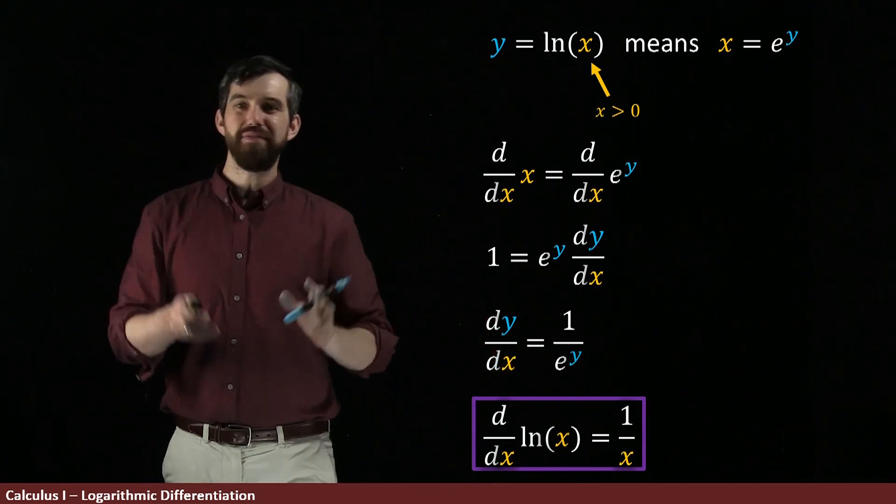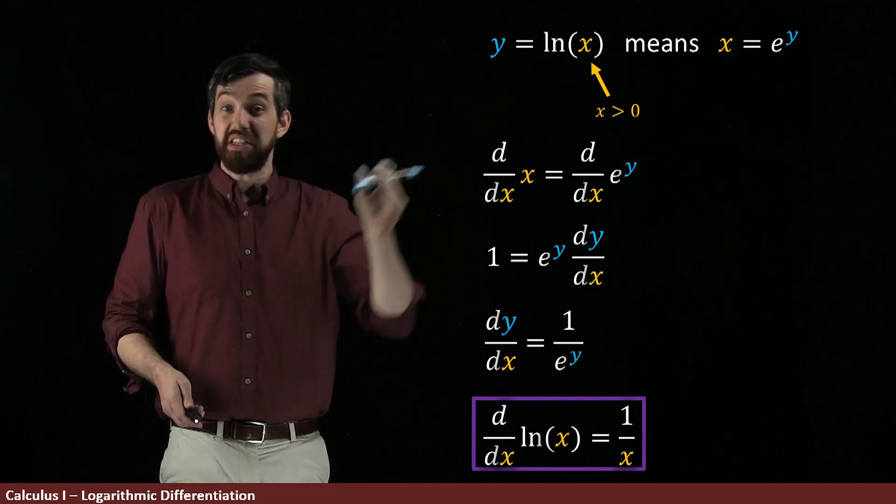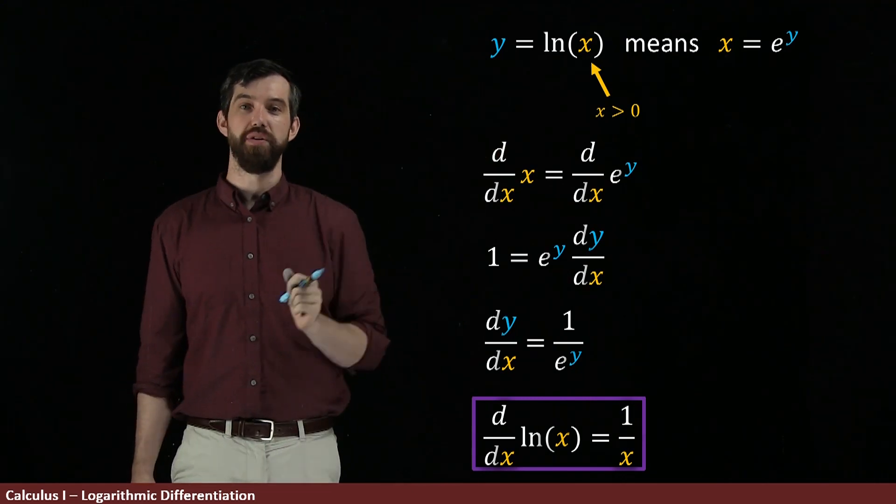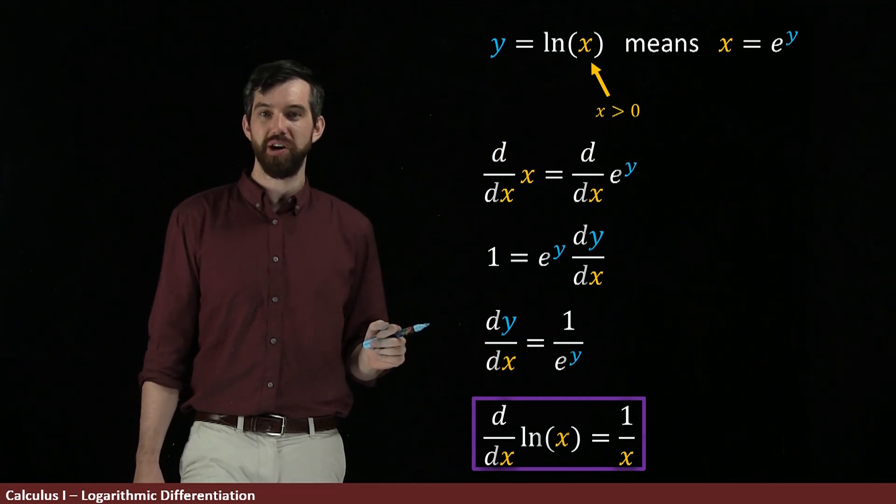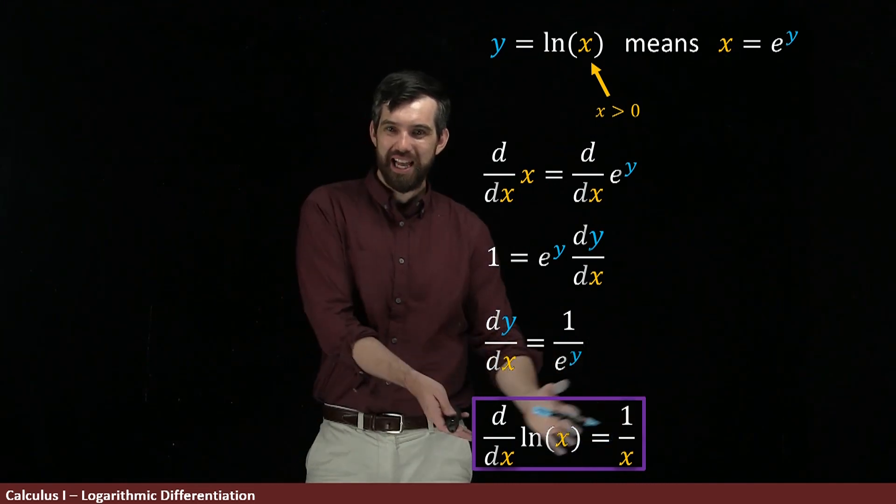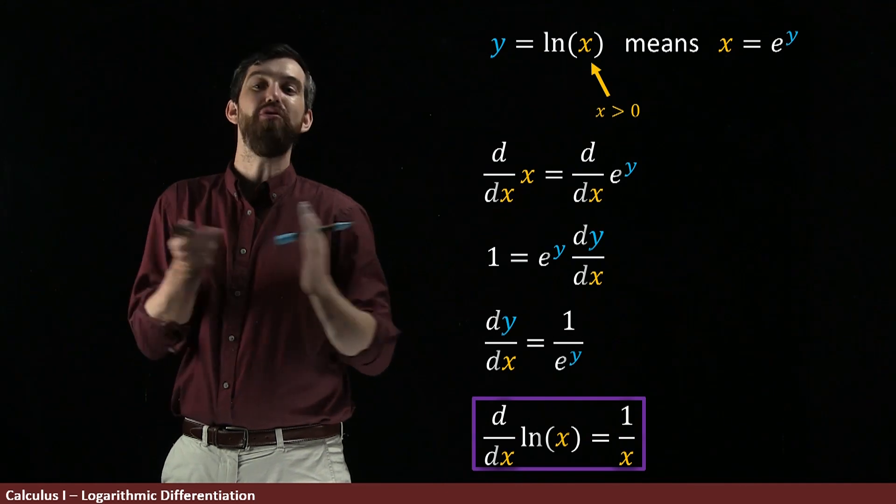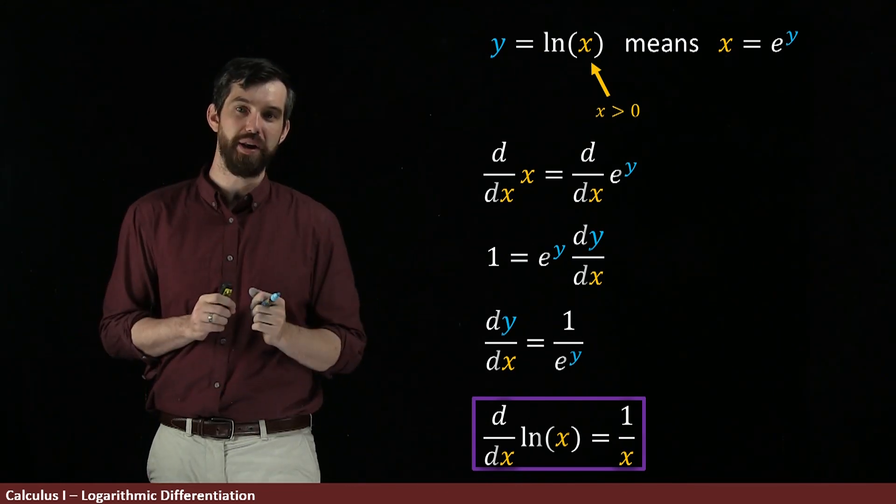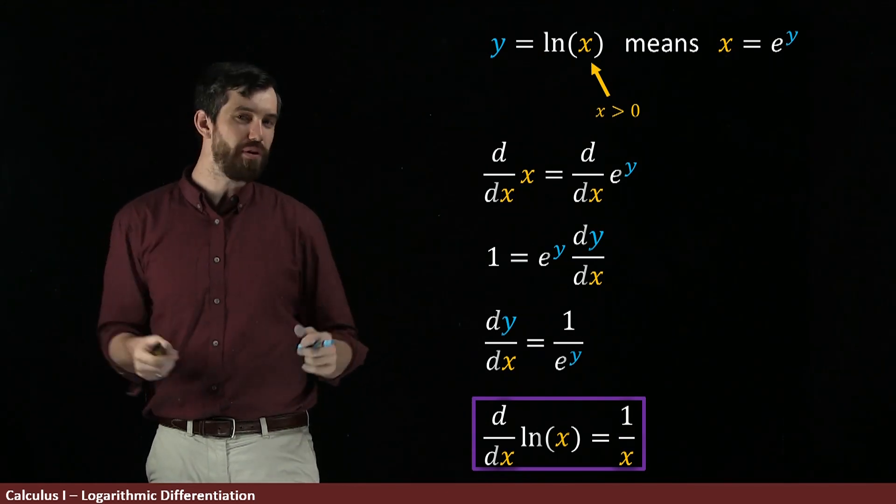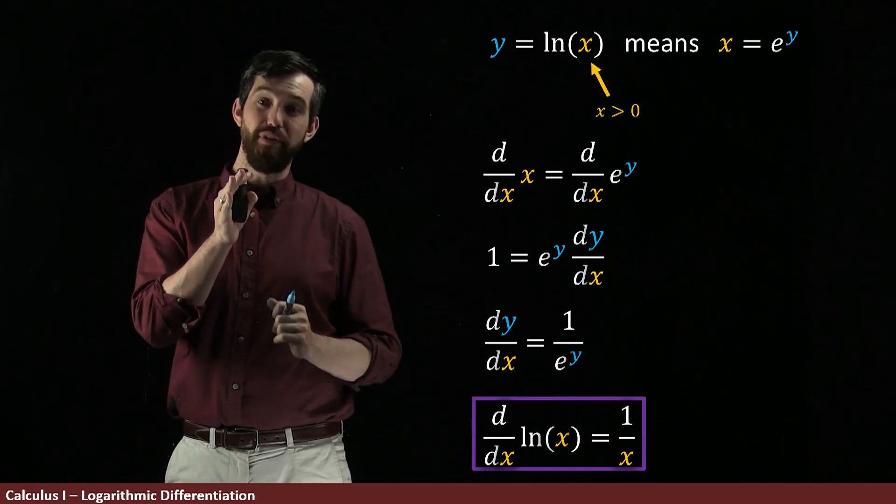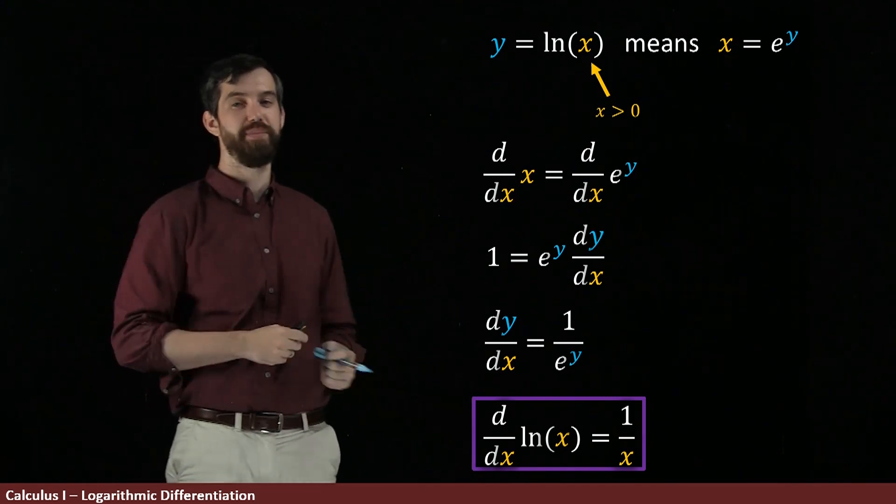Now, everything I've done here is in the sense of my restricted domain x being greater than 0. I don't have a division by 0 here, but it's sort of interesting because the function on the right, 1 over x, that has a domain of every single real number except 0. But the thing on the left, the natural logarithm, that's going to have a domain of only the positive numbers. So there's a little bit of an asymmetry here.